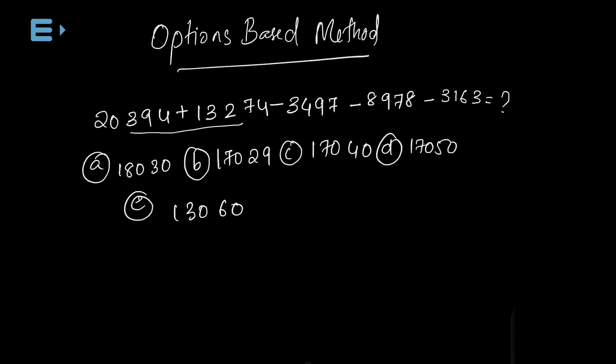We are going to try the traditional method — we can add and find the difference. But that takes time. How do we solve this in about 2 seconds? I will explain. All the last two digits of the options are different, so we only need to look at the last two digits.